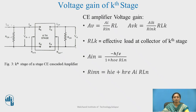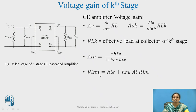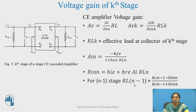For any particular stage, always calculate from the last stage to the first stage. For the (N-1)th stage, R_{L(N-1)} equals the parallel combination of R_{C(N-1)} and R_{INN}: R_{C(N-1)} times R_{INN} divided by (R_{C(N-1)} plus R_{INN}). This is because there is always a parallel combination — the load impedance of the previous stage in parallel with the input impedance of the nth stage — giving the effective load.